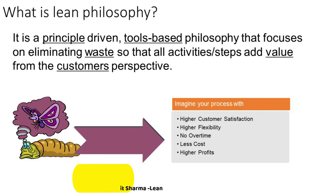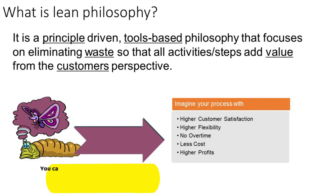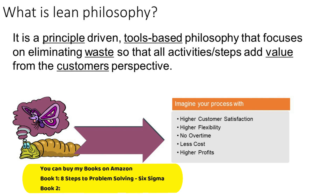Let us take an example to understand customer perspective better. The customer asked you to create a table with a length of one meter, but you had wood of 1.5 meters and thought giving a bigger table would make the customer very happy. So you created a 1.5-meter table and sent it to the customer's house, anticipating they would be your loyal customer going forward. The customer called back and said the space in his house was only one meter in length — he needed a one-meter table, not 1.5 meters.